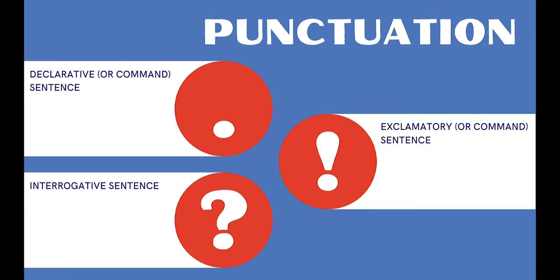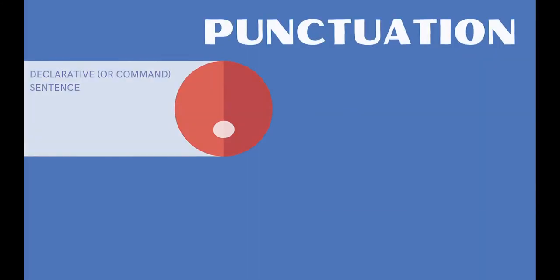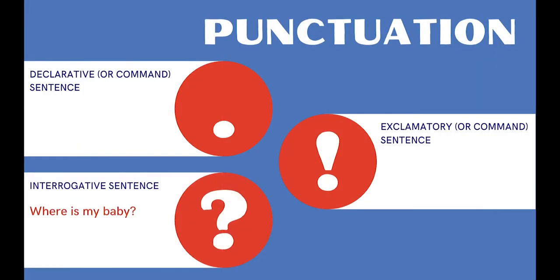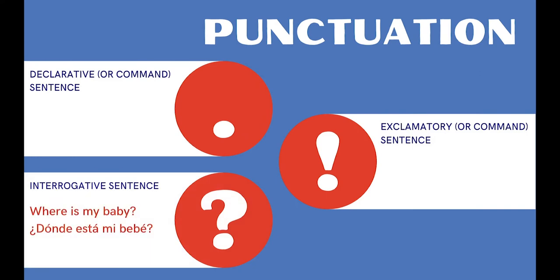Spanish uses all of these punctuations as well. In the animals playlist, we talk about 'where is my baby?' — ¿Dónde está mi bebé? In English we have 'where is my baby' with a question mark. In Spanish we have an upside-down question mark, then 'Dónde está mi bebé,' then a right-side-up question mark.